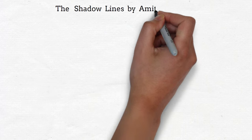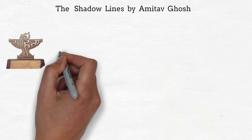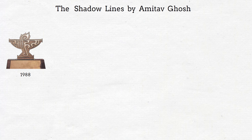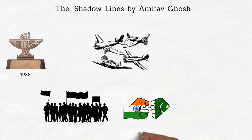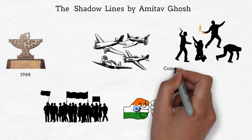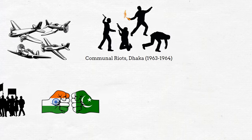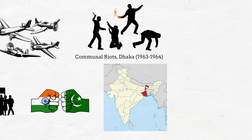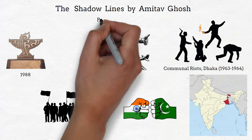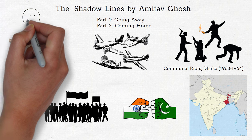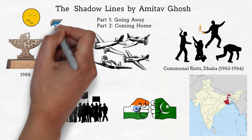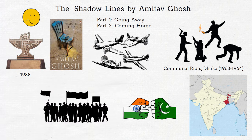Good morning students. In this video we are going to talk about The Shadow Lines by Amitav Ghosh, which is a winner of the Sahitya Academy Award 1988. The novel highlights the impact of historical events such as the Swadeshi movement, the Second World War, Partition of India, and communal riots of 1963-64 in Dhaka and Kolkata on the characters' lives. The novel has two parts: going away and coming home. But as the plot is a little complex, we will look at the overall story rather than working individually on different parts.